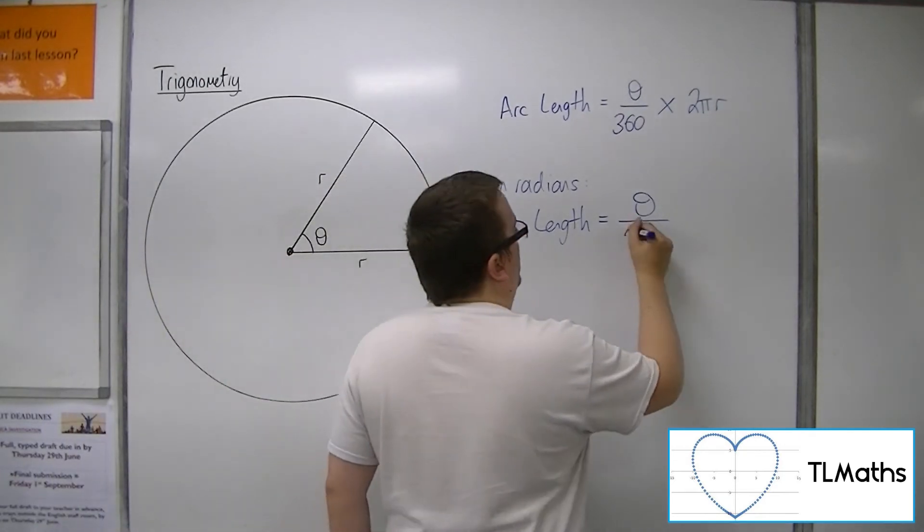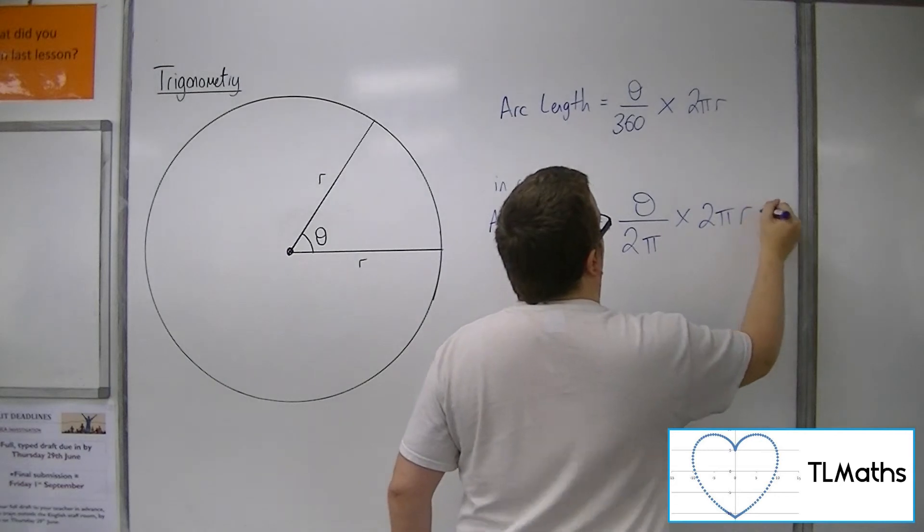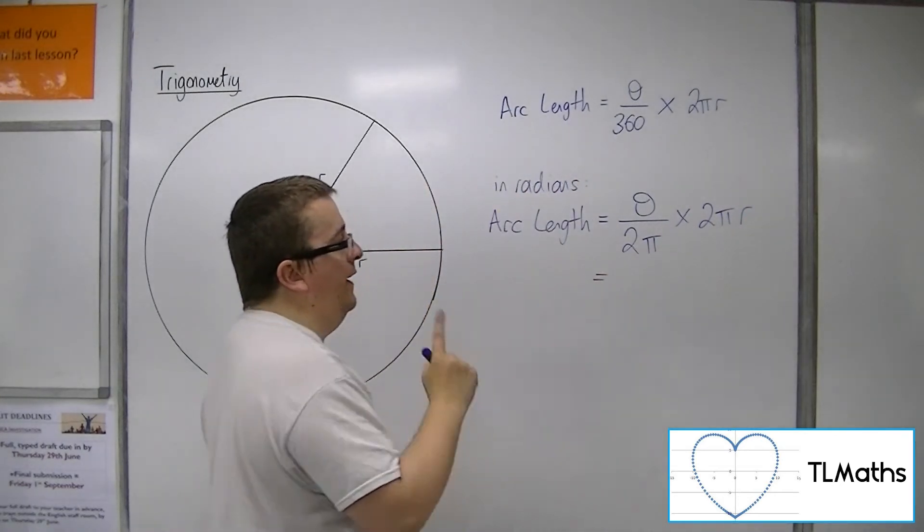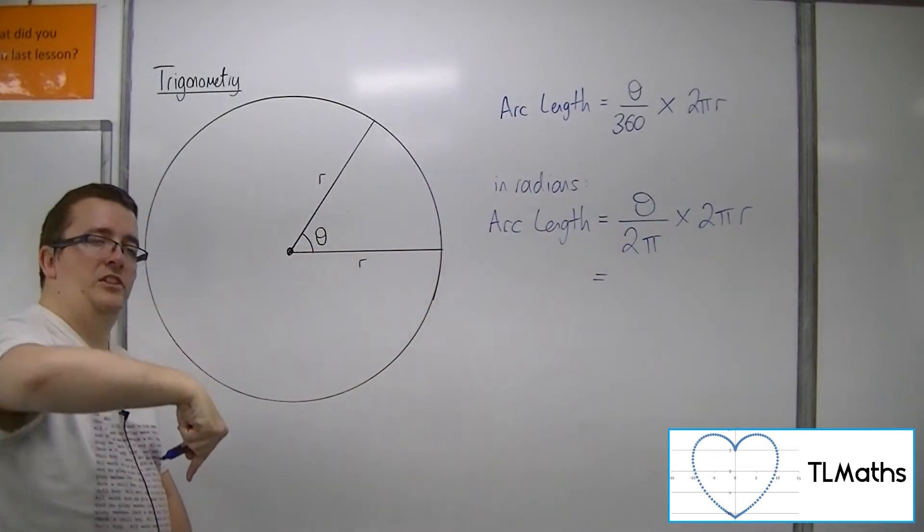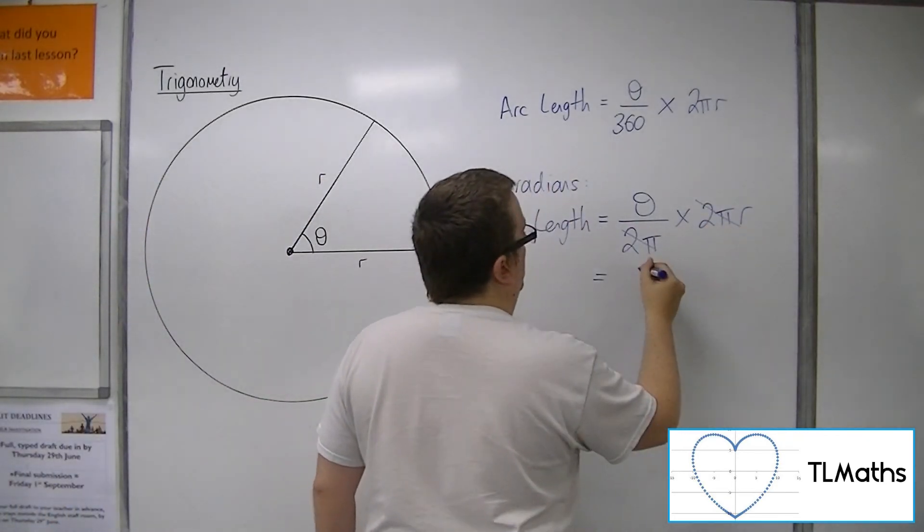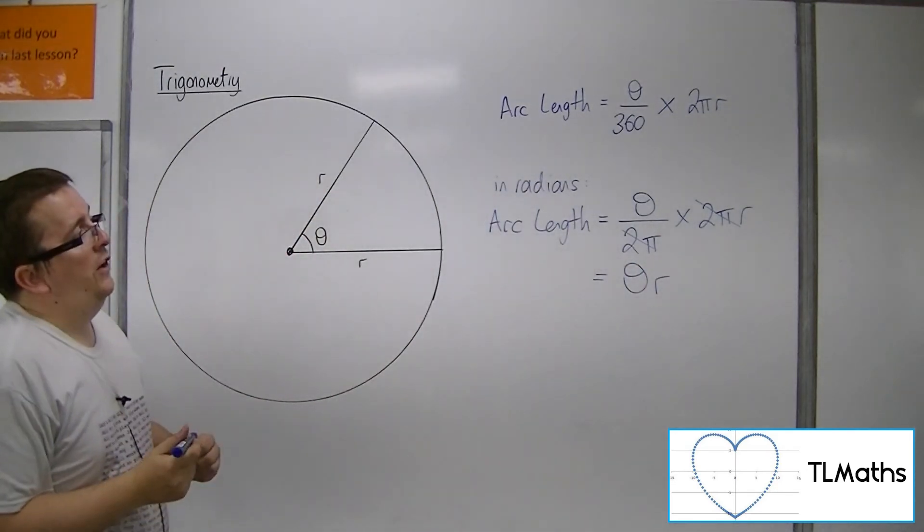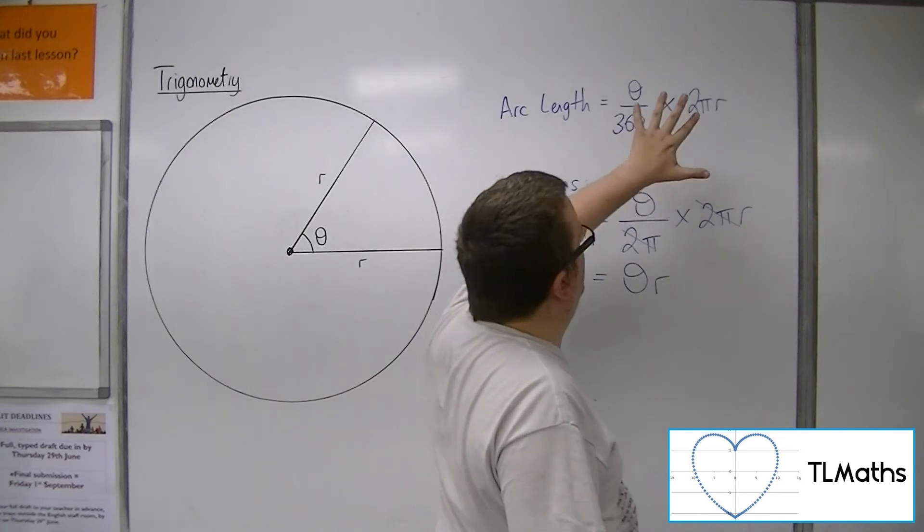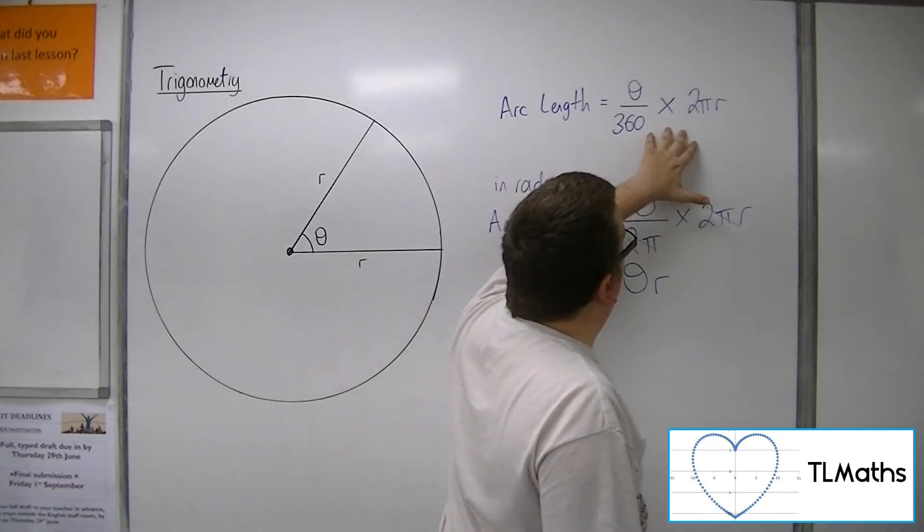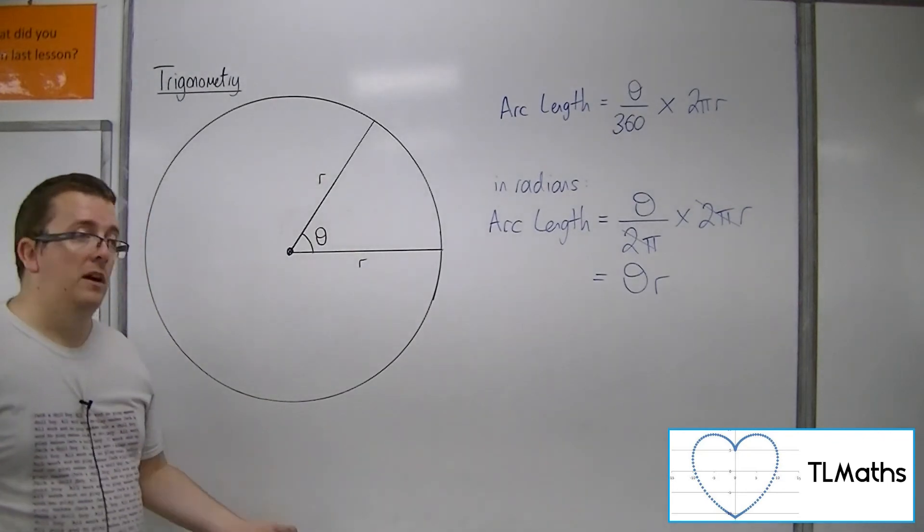But conveniently, because you're dividing by 2π and multiplying by 2πr, the 2πs cancel. And so you're just left with theta times r. So this formula that is in degrees, when you put it into radians, just becomes θ times r.